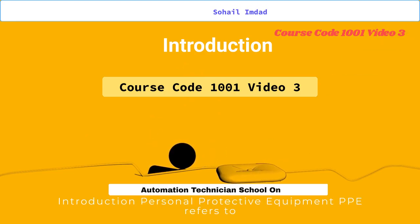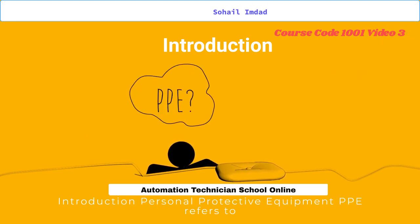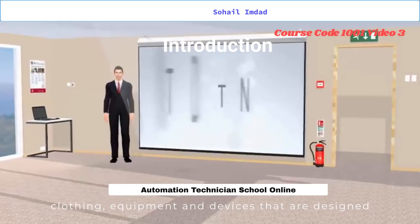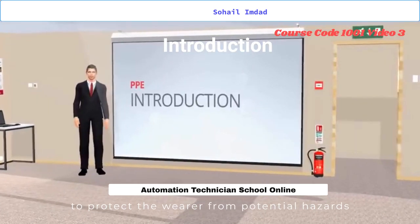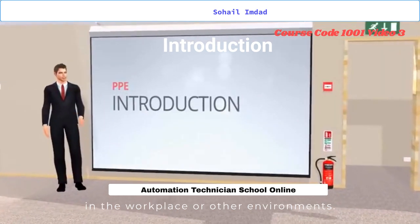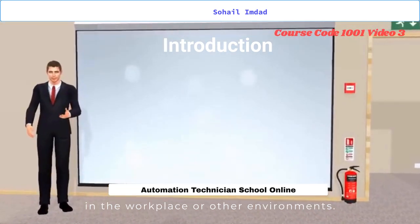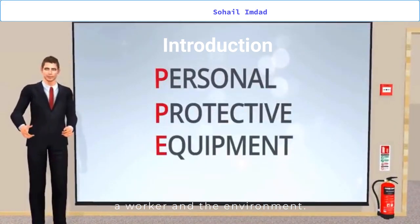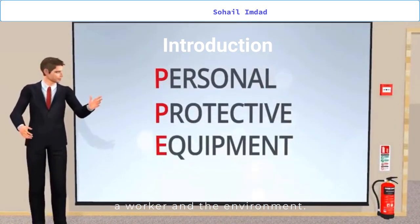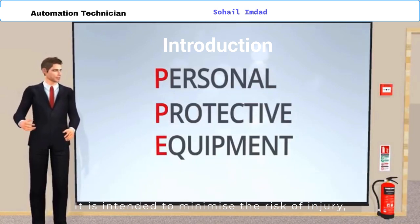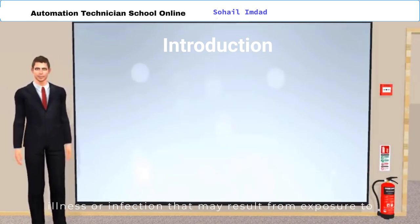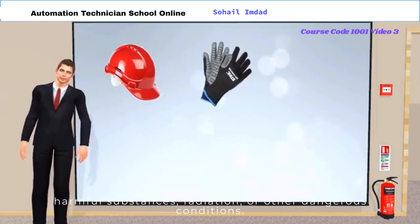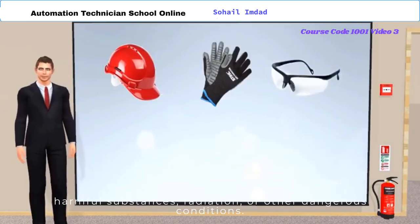Introduction: Personal Protective Equipment refers to clothing, equipment and devices that are designed to protect the wearer from potential hazards in the workplace or other environments. PPE is an important barrier between a worker and the environment. It is intended to minimize the risk of injury, illness or infection that may result from exposure to harmful substances, radiation or other dangerous conditions.